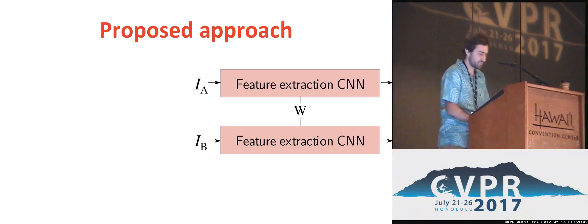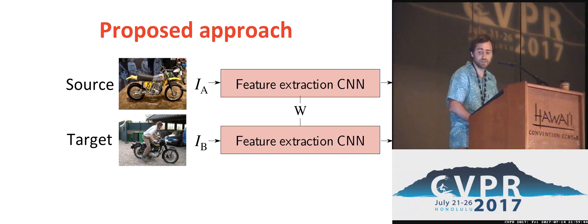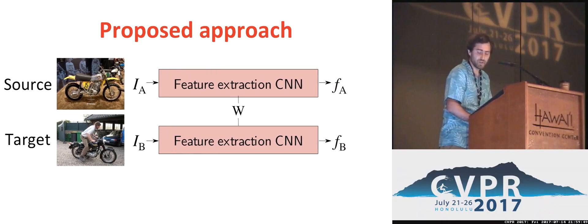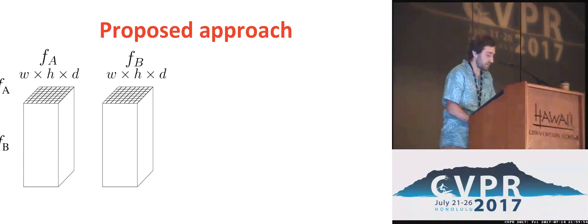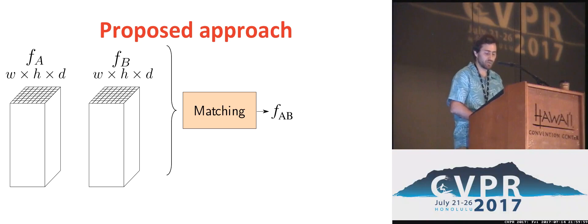Let's look into each of these steps in more detail. We start with the source and target images, which are passed to a Siamese feature extraction CNN with shared weights. On the output we obtain two dense feature grids, which are then input into the second stage: the matching layer.